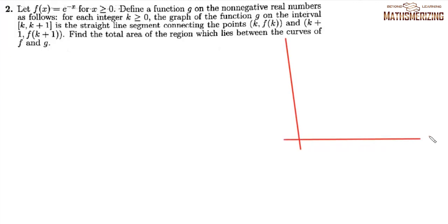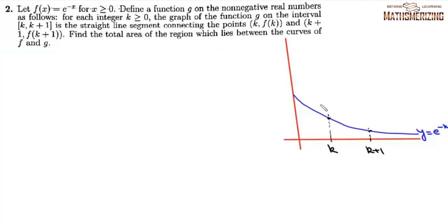We draw the two curves. The graph of y = e^(−x) is drawn, and for some points k and k+1 on the curve, which are (k, f(k)) and (k+1, f(k+1)), joining these two points gives a straight line representing g(x). We need to find the area between these two curves; call this area A_k.